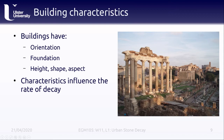Another factor that influences how stone and buildings weather is the characteristics of the building. Buildings all have different characteristics — a different orientation, so the direction that the different sides of the building are facing; different foundations; different heights, shapes, and textures. For example, you could have a highly decorated church wall or a very plain flat stone wall. Each of those different characteristics is going to influence how quickly the stone decays, irrespective of the chemical or mineral properties of the stone.